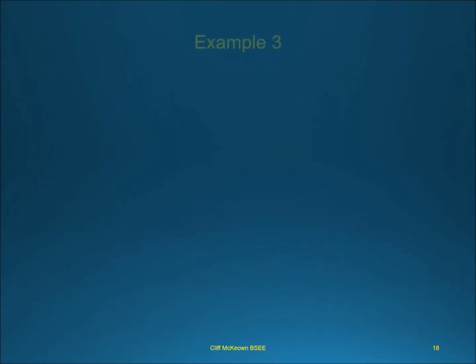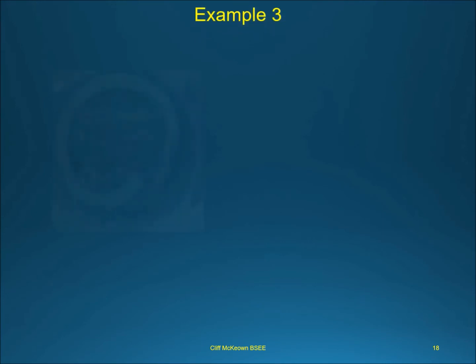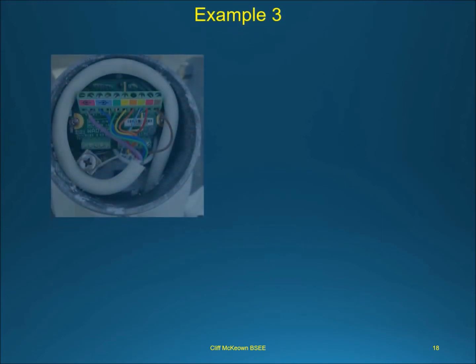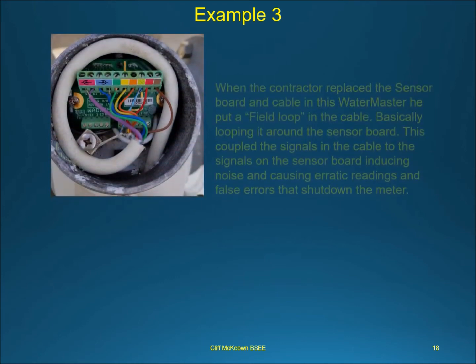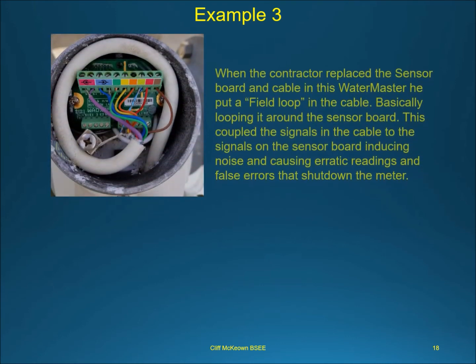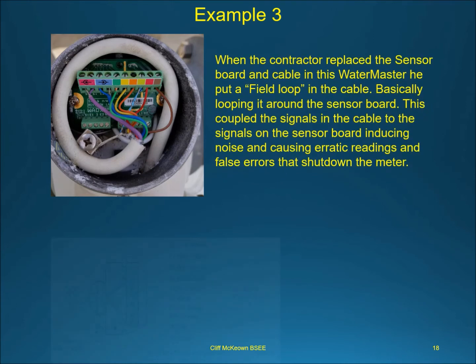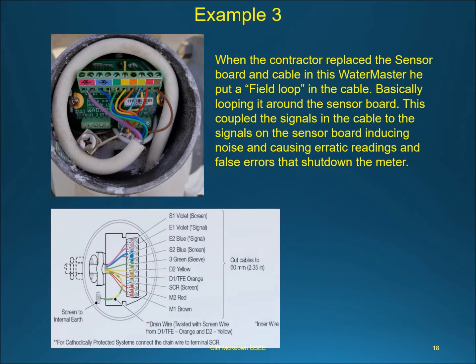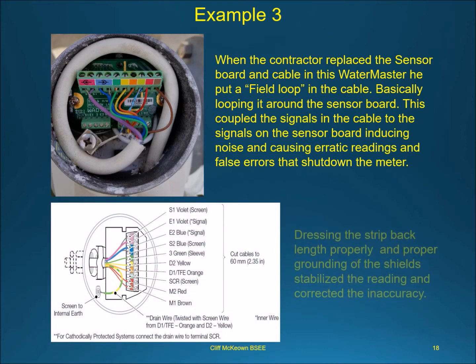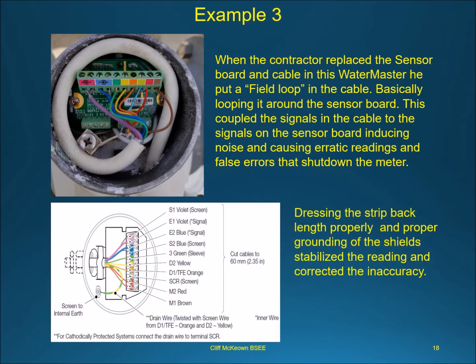When the contractor replaced the sensor board and cable in this Water Master, he put a field loop in the cable — basically looping it around the sensor board. This coupled the signals in the cable to the signals on the sensor board, inducing noise and causing erratic readings and false errors that shut down the meter. Dressing the strip-back length properly and proper grounding of the shield stabilized the reading and corrected the inaccuracy.